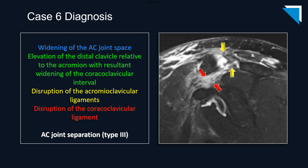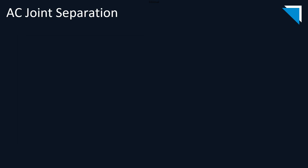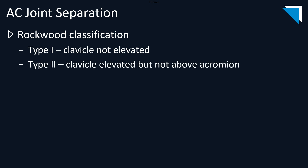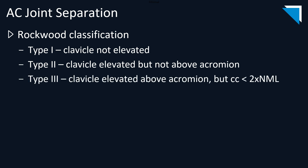This constellation of findings is consistent with a type 3 acromioclavicular joint separation. These injuries are typically graded according to the Rockwood classification system. With type 1 injuries, there is no clavicular elevation. With type 2 injuries, the clavicle is elevated, but the lower border of the clavicle is not elevated above the upper border of the acromion. However, the coracoclavicular interval is not more than two times normal, which is generally considered approximately 1.1 to 1.3 centimeters.